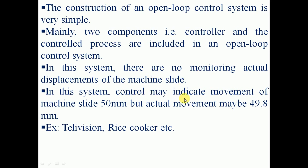In this system, the control may indicate movement of the machine slide as 50 mm, but the actual movement may be 49.8 mm. The input given is 50 mm, the output obtained is 49.8 mm — a difference of 0.2 mm — and since input and output are not compared, that difference remains. Examples of open loop control systems are the television and rice cooker. With the television, output is not compared to the intended input, and with a rice cooker, the heat supply is not fed back to control temperature. These are open loop control systems.